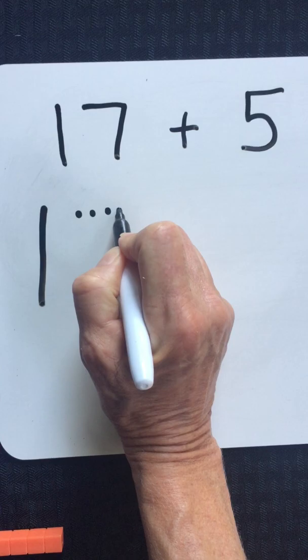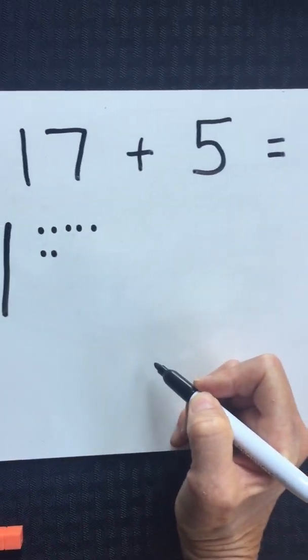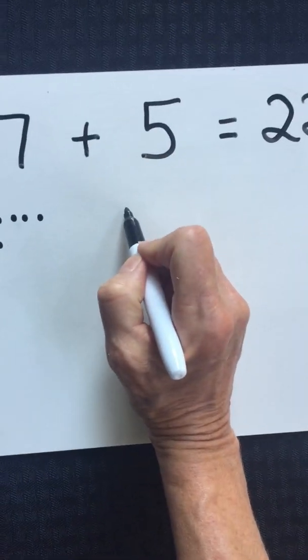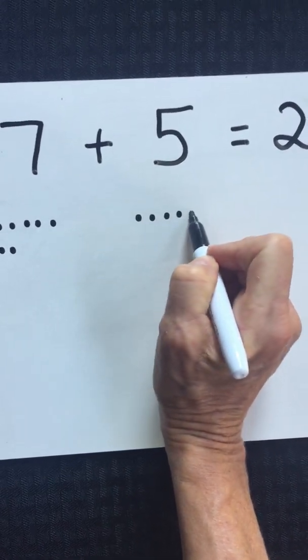One, two, three, four, five, six, seven. And when I add five more, one, two, three, four, five.